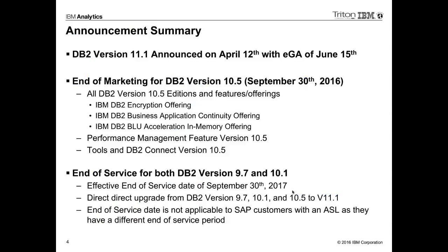We announced on April the 12th that DB2 version 11 electronic GA is on June the 15th. At the same time, we announced end-of-marketing for version 10.5 — end-of-marketing occurs September 30th, 2016, covering all DB2 editions and features. If you have an encryption or business continuity offering, those will be migrated to the version 11 packaging. Importantly, we're announcing end-of-service for both version 9.7 and 10.1, both going out of service at end of September 30th, 2017. If you're on either of those old versions, you'll need to migrate to the newest version or pay for extended service.